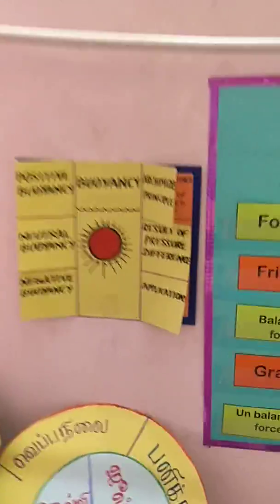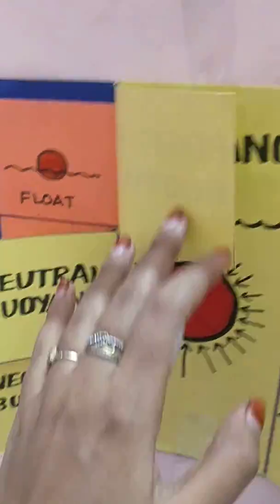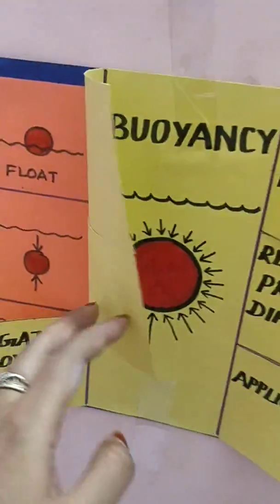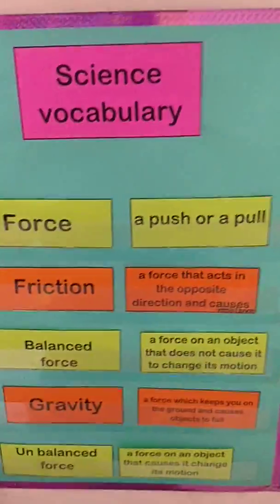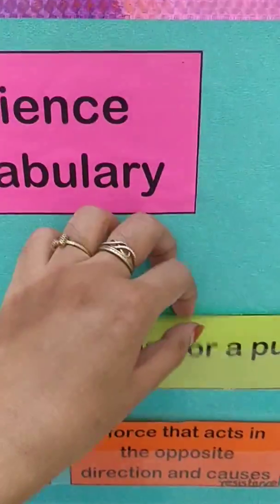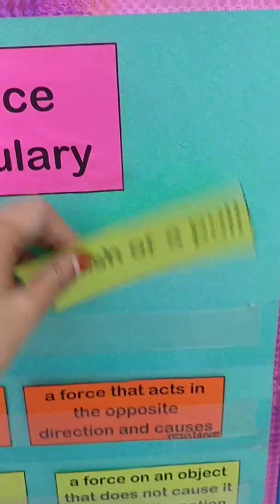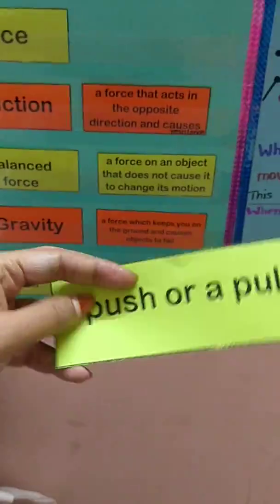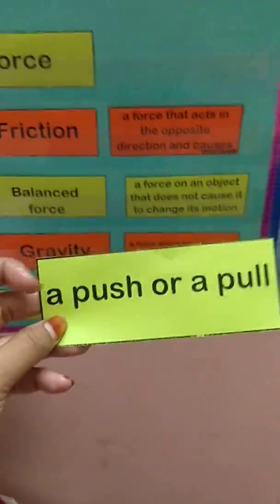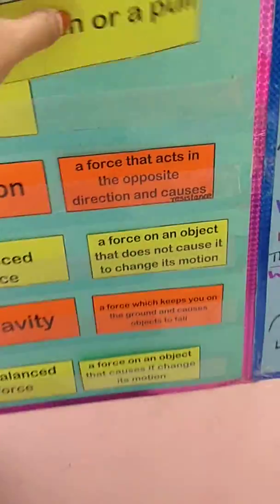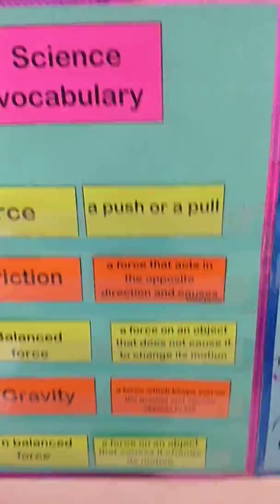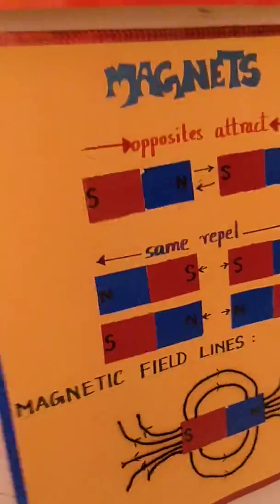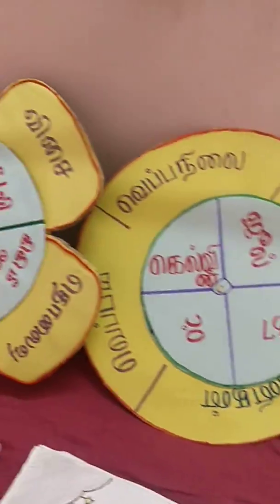Here I have flow charts for vector quantities and scalar quantities with examples and units. This is an interactive aid for buoyancy — it works like an activity. The cards can be removed and a set given to the children; they have to read and match them with the appropriate vocabulary. Then a few more charts for magnets.